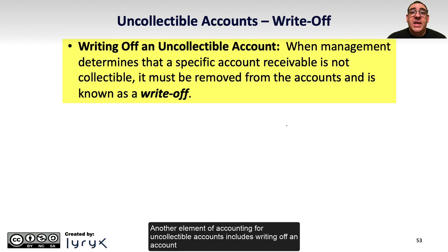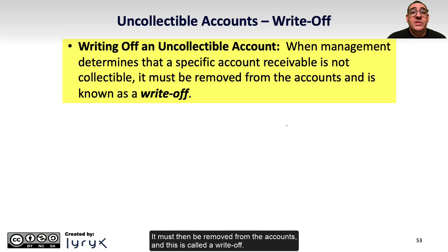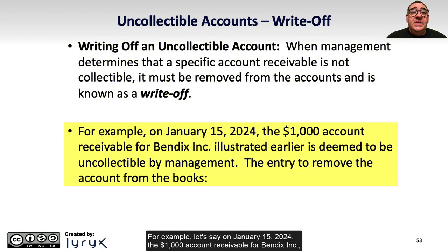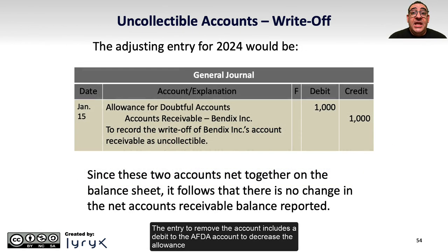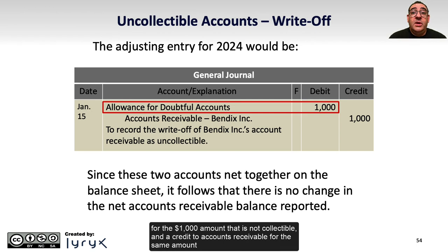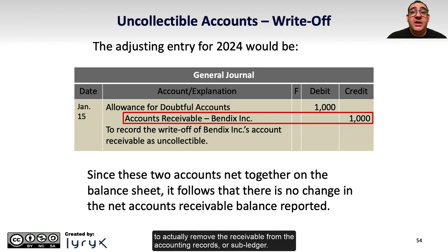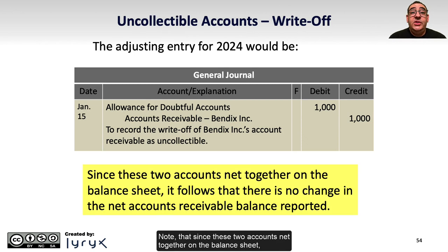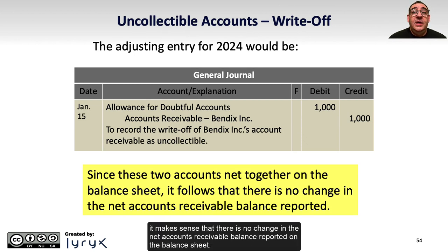Once management determines that a specific account receivable is not collectible, it must be removed from the accounts — this is called a write-off. For example, on January 15, 2024, the $1,000 account receivable for Bendix, Inc. is deemed uncollectible. The entry includes a debit to AFDA for $1,000 to decrease the allowance, and a credit to accounts receivable for $1,000 to remove it from the records. Since these two accounts net together on the balance sheet, there is no change in the net accounts receivable balance reported.